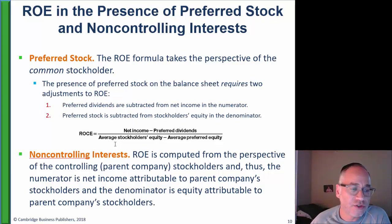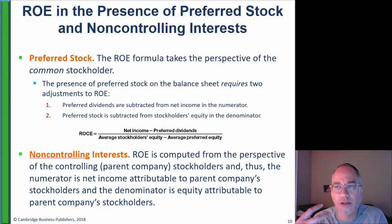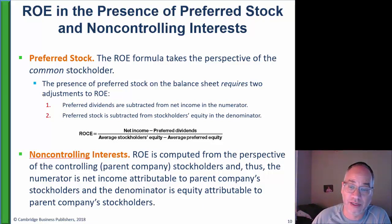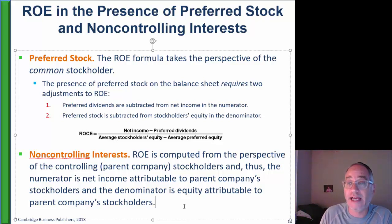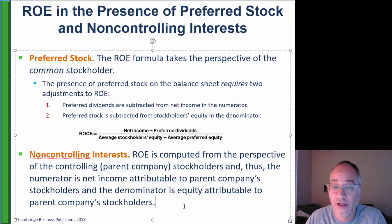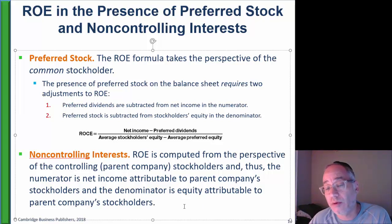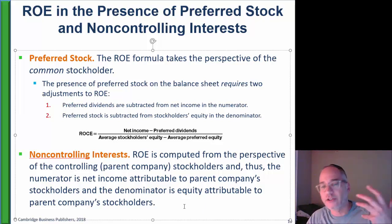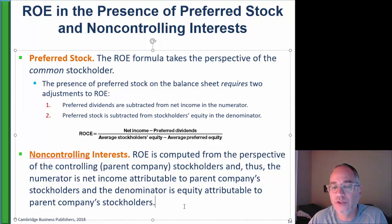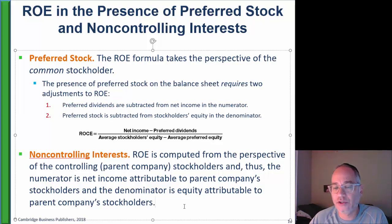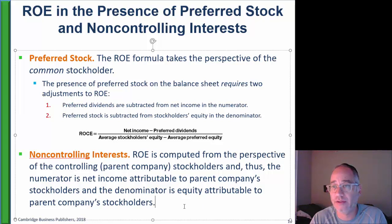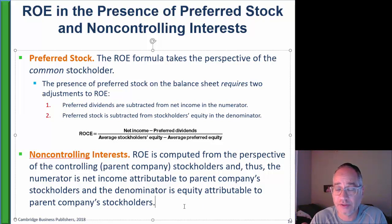Non-controlling interest is a little trickier. It arises when a parent owns a subsidiary but not 100% of it — for example, if the parent owns 90%, the remaining 10% belongs to the non-controlling interest. You would always focus on the controlling interest and exclude the non-controlling interest. When calculating return on equity, you include all net income attributable to the parent shareholders, and in the denominator you exclude any non-controlling interest.